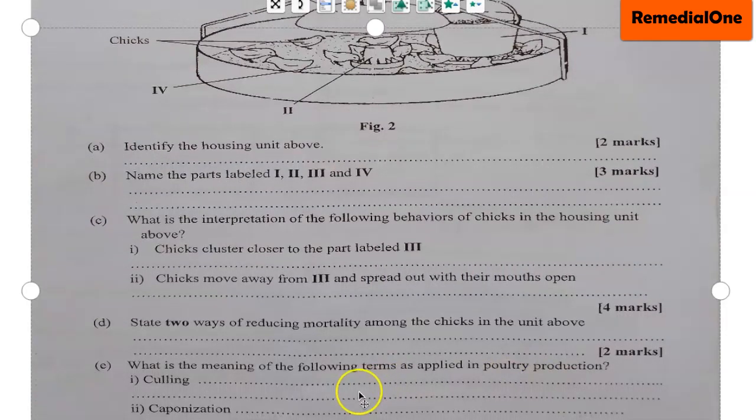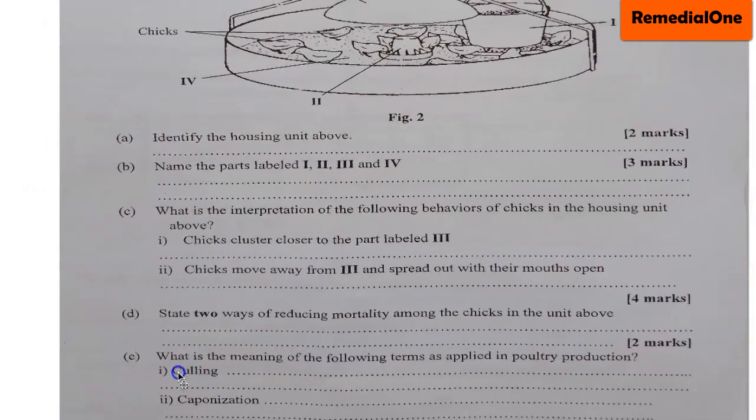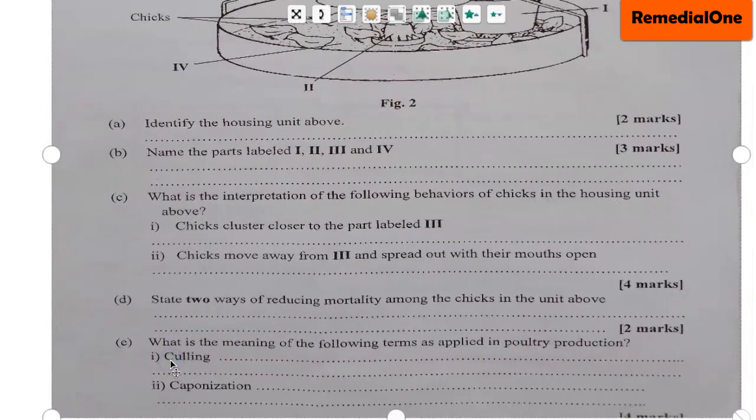Question D: State two ways of reducing mortality among the chicks in the unit above. Question E: What is the meaning of the following terms as applied in poultry production? The first one is culling, and the second one is caponization. So that's the question.